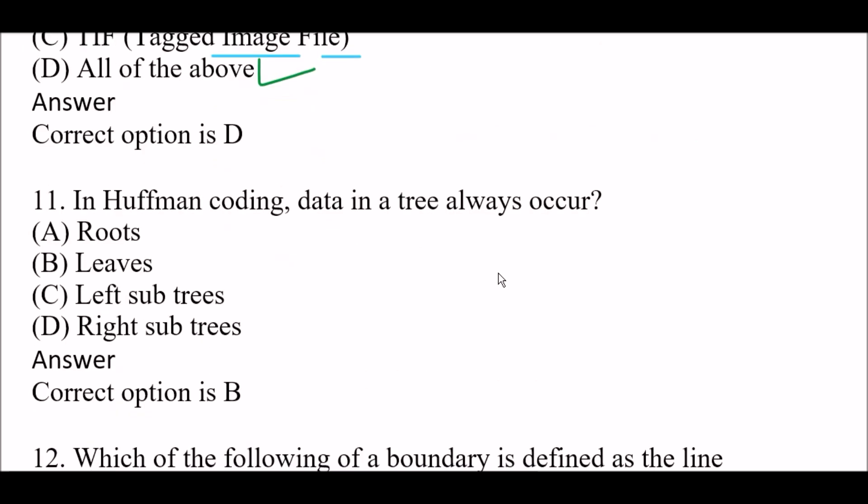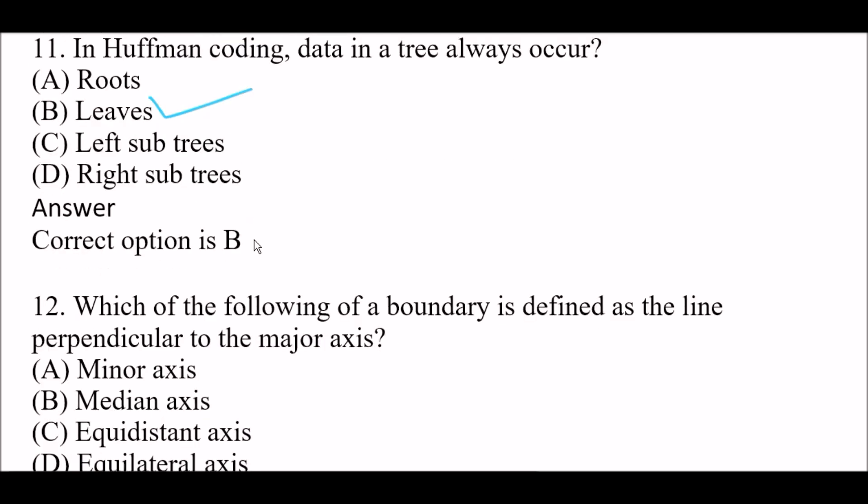Next question: In Huffman coding, data in a tree always occurs at — Option A: roots, Option B: leaves, Option C: left subtrees, Option D: right subtrees. The right answer is Option B, leaves. In Huffman coding, data in a tree always occurs at leaves.